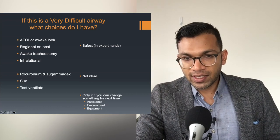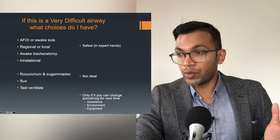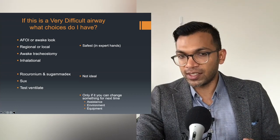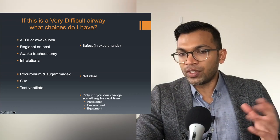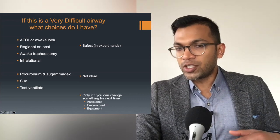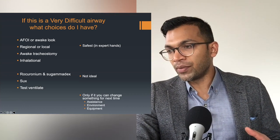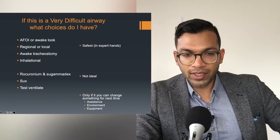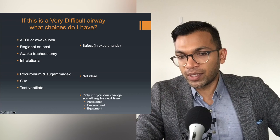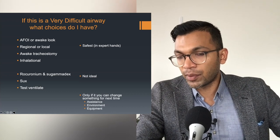You will hear these as solutions: rocuronium and reversal with sugammadex, suxamethonium and waiting for it to wear off, or test ventilating. These are not ideal. For example, if you reverse someone's muscle paralysis or the sux wears off, you may still have propofol or fentanyl on board, so the patient still might not breathe adequately. Test ventilation is also fraught with complications because you may have a lot of false positives.